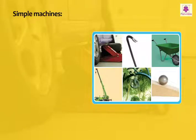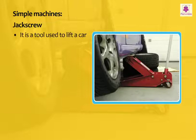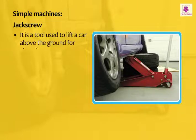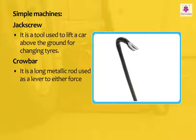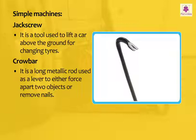The uses of some tools. For example, a jack screw is a tool used to lift a car above the ground for changing tires. A crowbar is a long metallic rod used as a lever to either force apart two objects or remove nails.